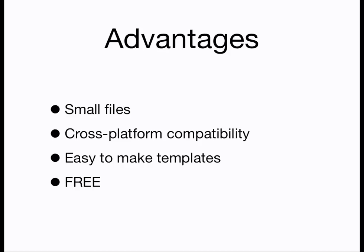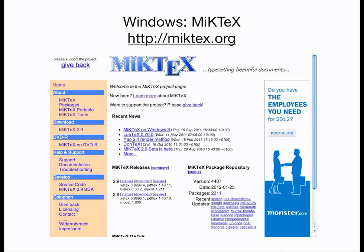In the next screencast we'll get started with making your first LaTeX document. But between now and then, you'll need to gain access to LaTeX, and there are several ways to do this. If you're a Windows user, the standard LaTeX system is called MiKTeX, and can be downloaded and installed from MiKTeX.org.